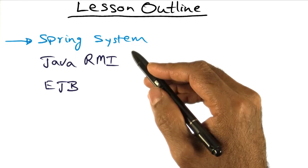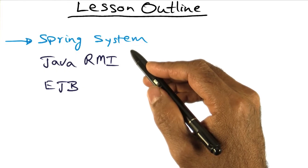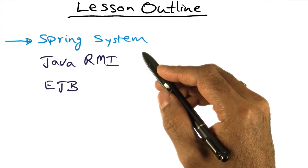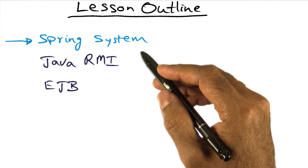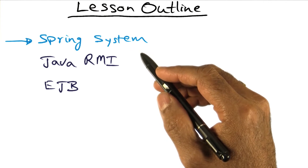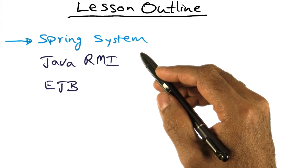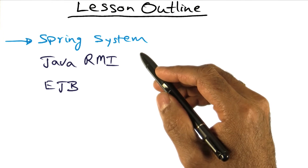In this module of the Advanced Operating Systems course, we are going to see examples of how distributed object technology is influencing commercial offerings in the computer industry. We'll start this lesson module with the discussion of the Spring System, which was designed and implemented at Sun Microsystems as a network operating system for use in a local area network.